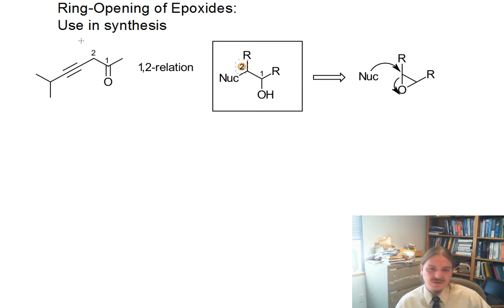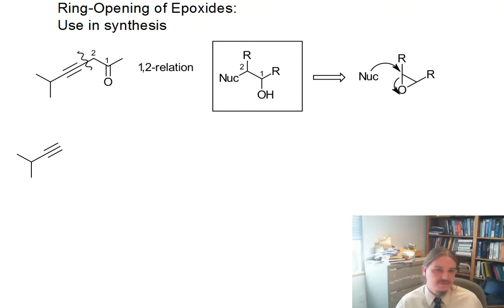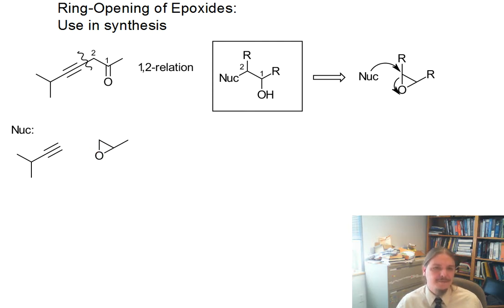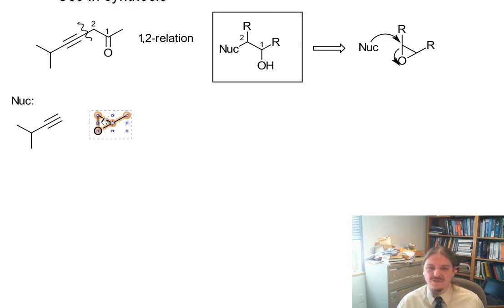This kind of arrangement looks like something I can make from an epoxide. I know I'm going to want to form this carbon-carbon bond here. I'm going to be making a nucleophile — the alkyne is my nucleophile — and the other piece is going to be an epoxide, and it's going to look like this. There is a chirality center here, but it's going to turn out we don't care.